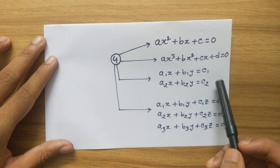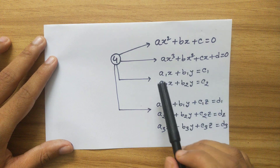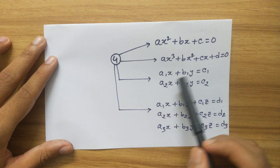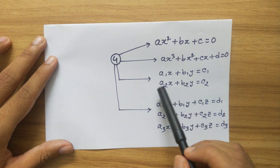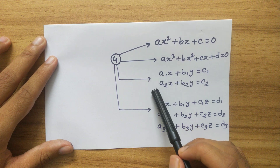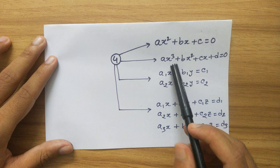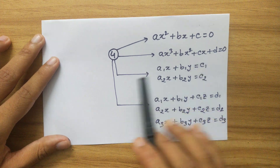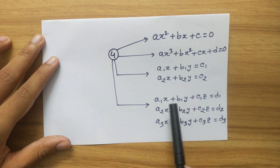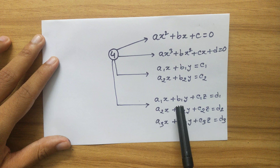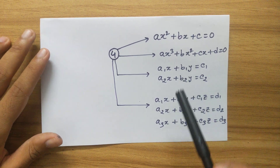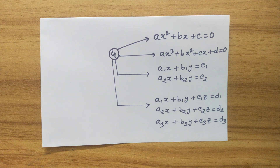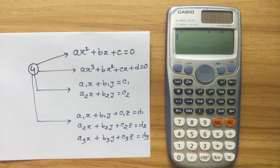The third type of equations we can solve is where we have two equations with two variables X and Y. And the last type is three equations having three variables. Let's see how to solve these kinds of equations with this calculator.